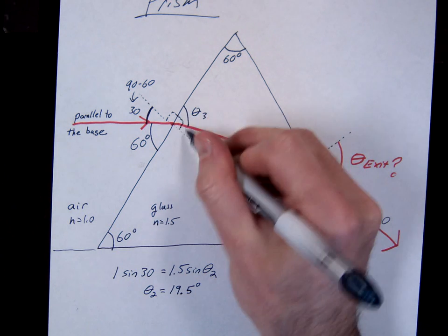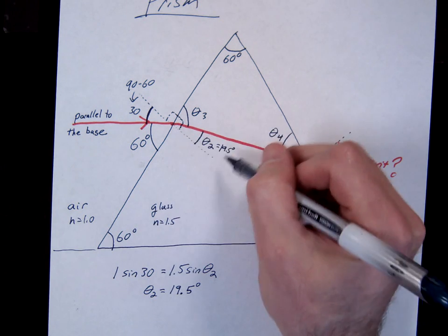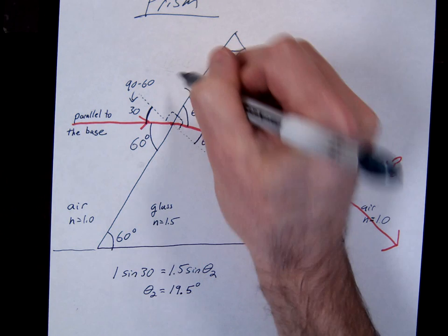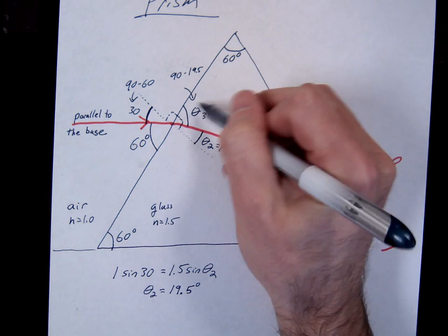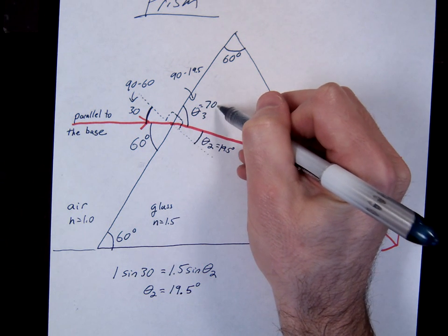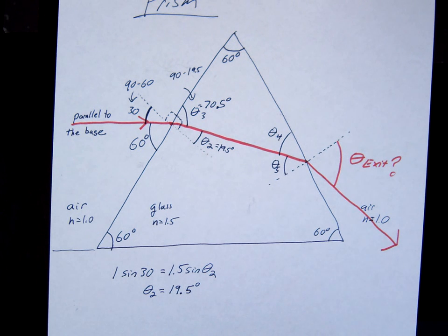So this right here is, again, remember this is a normal right angle, right triangle. So this is 19.5. This is, how do we find this? Okay, 90 minus 19.5. So this angle right here should be 70.5. Okay, so that's step one.